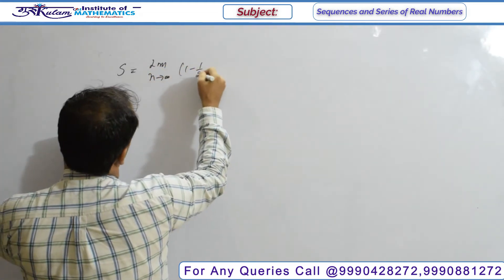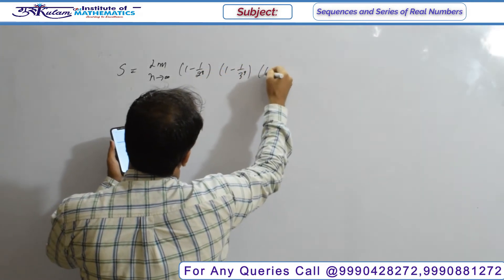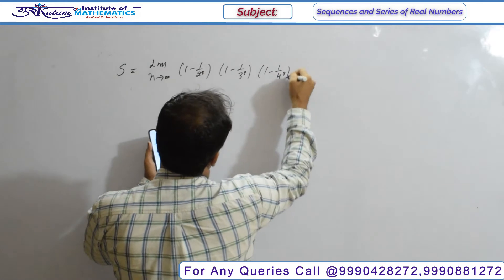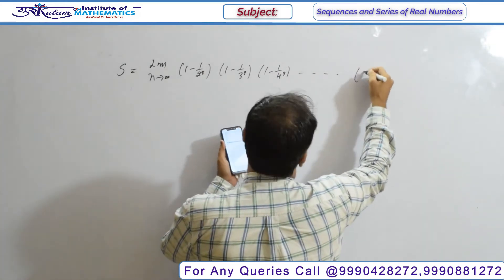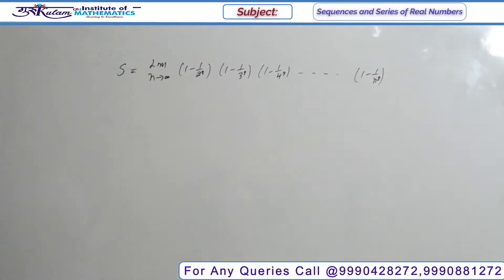The expression is (1 - 1/2²) × (1 - 1/3²) × (1 - 1/4²) up to (1 - 1/n²). This is the overall product we need to evaluate.